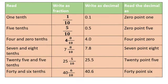Look at this chart. 1 tenth means 1 by 10, in decimal: 0.1. Next: 5 tenths means 5 by 10, in decimal: 0.5.